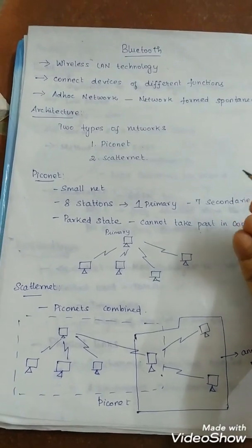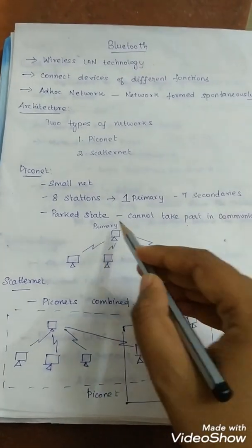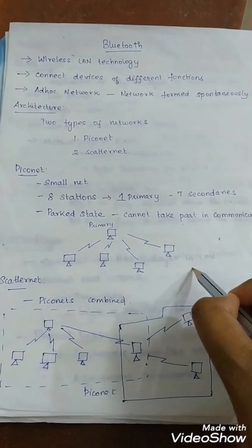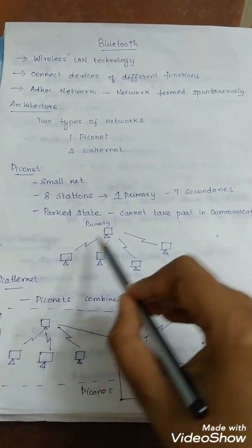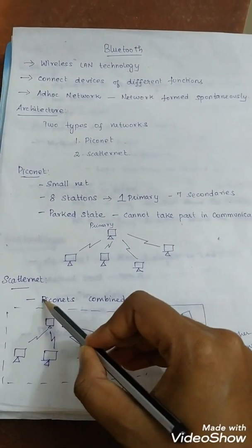A secondary in the parked state is synchronized with the primary but cannot take part in communication until it is moved from the parked state. Here is an example for Piconet: a primary station connected to the secondaries. Next one is Scatternet.